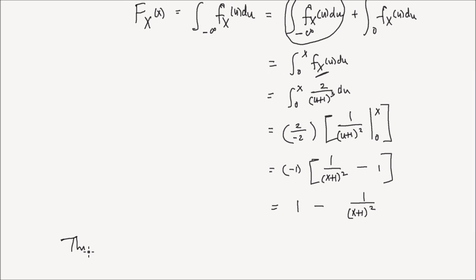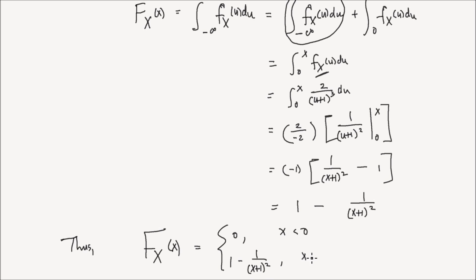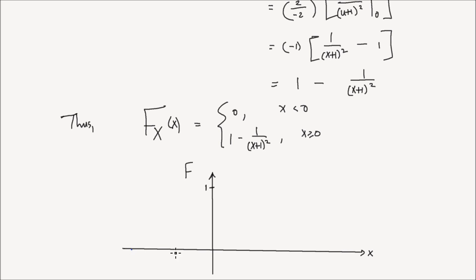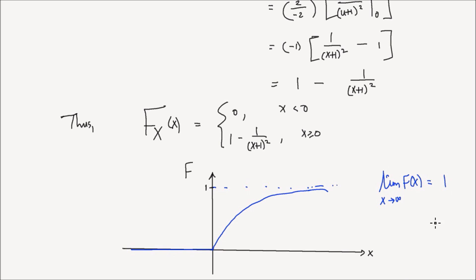Therefore, the CDF for that random variable x is 0 for values of x less than 0, or 1 minus 1 over (x plus 1) squared for values of x greater than or equal to 0. If you plot the CDF, you realize that it is 0 all the way up to 0, then it increases, but it never quite touches the line 1. In other words, the limit as x goes to infinity of the CDF equals 1. This is a property for any CDF: the limit as x goes to negative infinity of F of x is 0, and the limit as x goes to infinity of the CDF is 1.